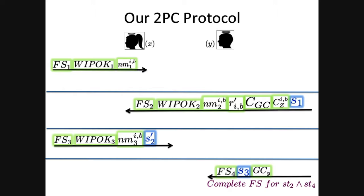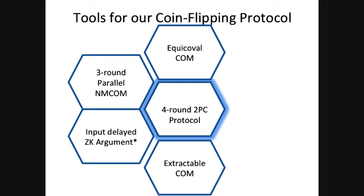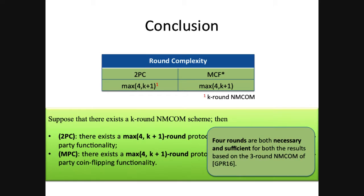If you want more details, you can ask me offline or see the paper. For the coin-flipping result, one might think you can just remove the garbled circuit and OT, but you actually have to change several other things to achieve it. To conclude: we revisited the round complexity of two-party computation and showed that we can indeed have four-round protocols. For MPC, we established a bound for the multi-party coin-flipping functionality of max(4, k+1), and proved that four rounds are both necessary and sufficient.